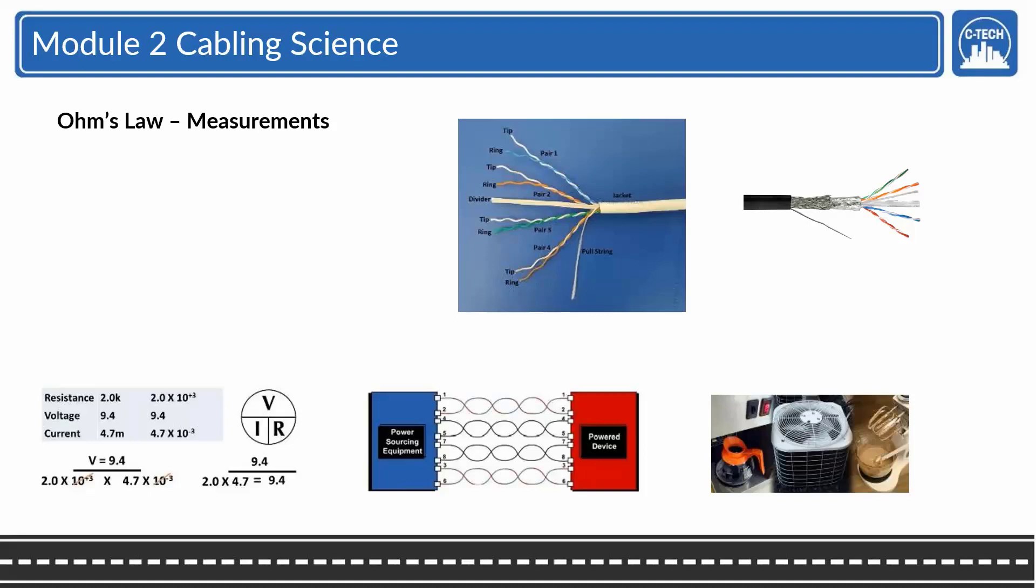Ohm's law is covered. We're going to actually measure batteries and things like that with the digital multimeter. Conductors, insulators, wire gauge is a big one from the grounding wire all the way down to the size of the data cable. And science of twisted pair and it really is a science - the twist, twist rates and conductors.